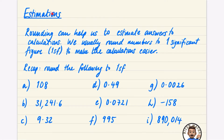In this playlist of videos we're going to be looking at estimations. The first kind of estimation we are going to do is rounding to one significant figure. Rounding can help us to estimate answers to calculations — we usually round numbers to one significant figure (1sf) to make the calculations easier. Estimations are really useful in real life when you want a rough size of an answer rather than the exact answer.